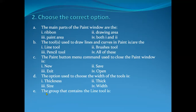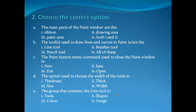Number E: The group that contains the Line tool is: number one option is Tools, second option is Shapes, third one is Colors, and fourth one is Image. Now we are going to select the correct option.